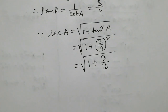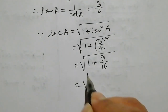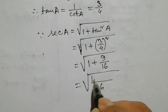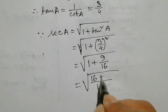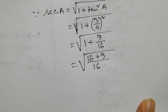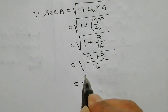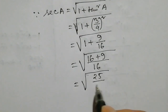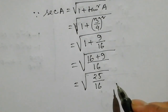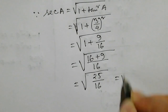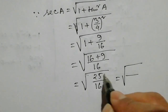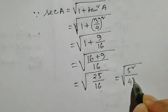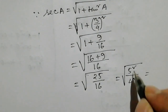Writing 25 by 16: since 25 equals 5 square and 16 equals 4 square, we get sec A equals root over 25 by 16, which equals 5 by 4.